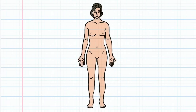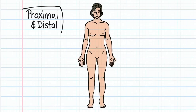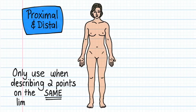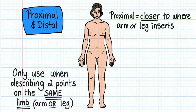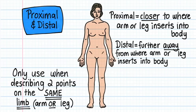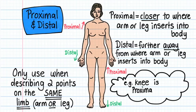Next are two anatomical terms you probably haven't heard before: proximal and distal. These terms are only used to describe the location of two points on the same limb, which could be either an arm or a leg. Proximal means closer to where the arm or leg inserts into the body. Distal means further away from where the arm or leg inserts into the body. On this arm and leg, red arrows indicate proximal whilst green arrows indicate distal. On the leg, the knee is proximal to the ankle, because the knee is closer to where the leg inserts into the body.